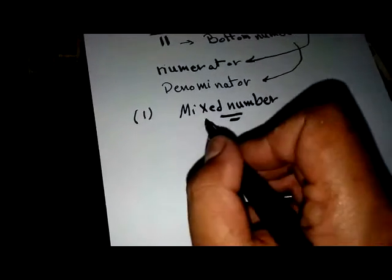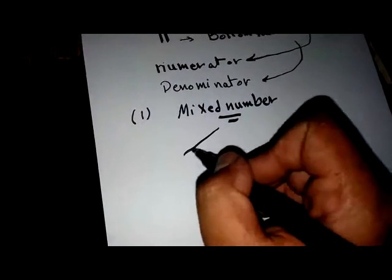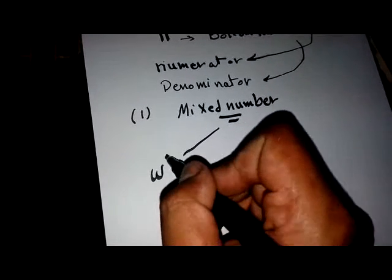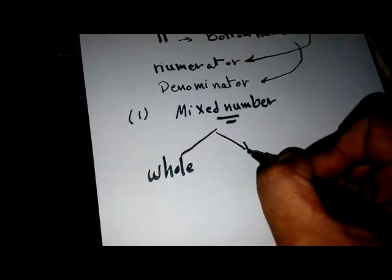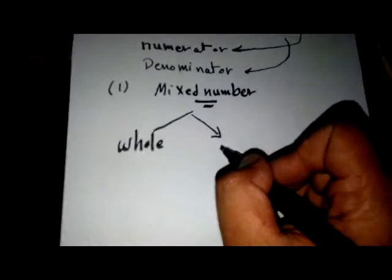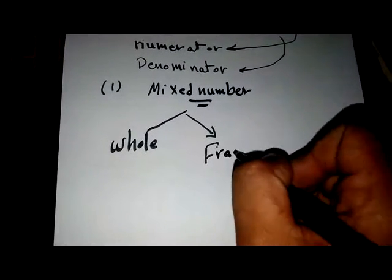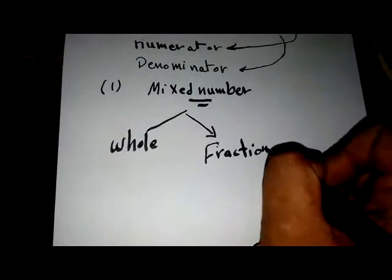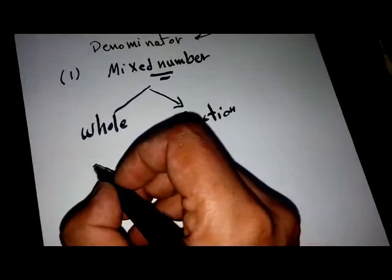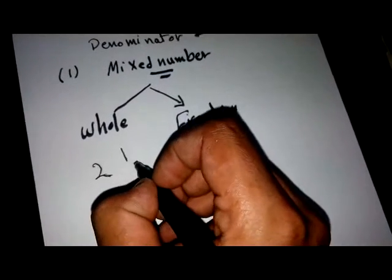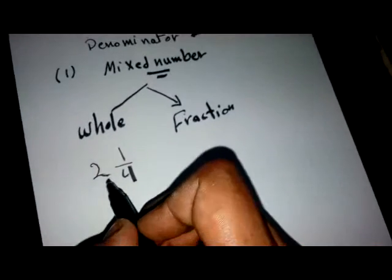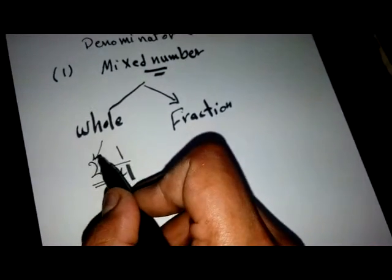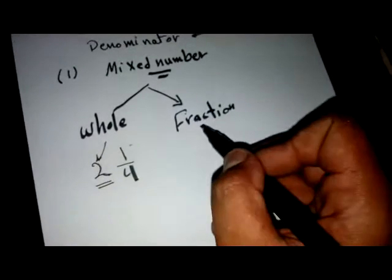A mixed number consists of two parts: the first part is a whole number, and the second part is a fraction. For example, two and one fourth - this whole number and this fraction.